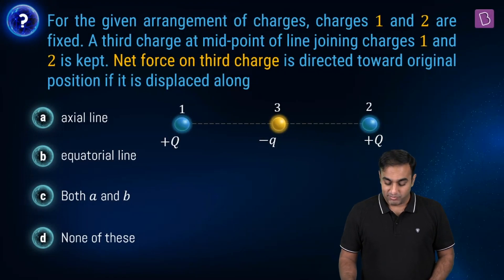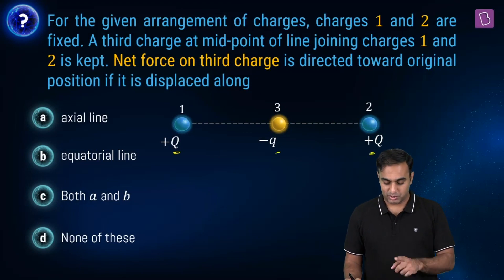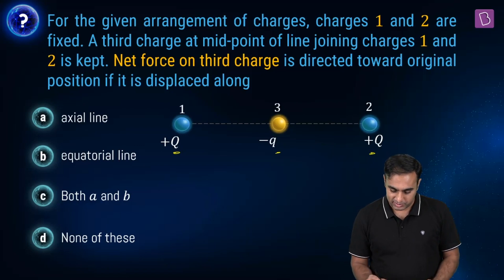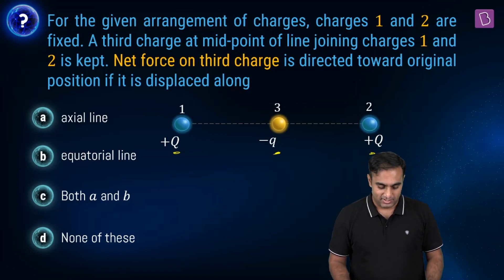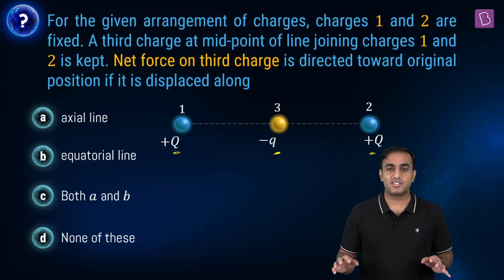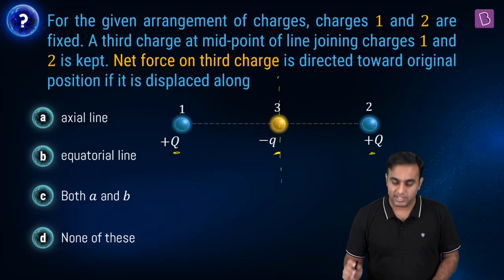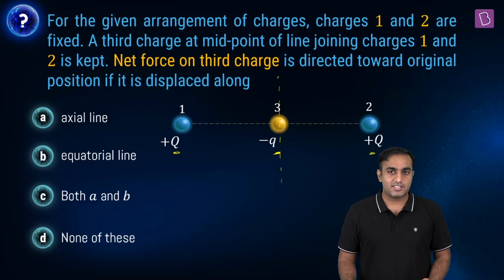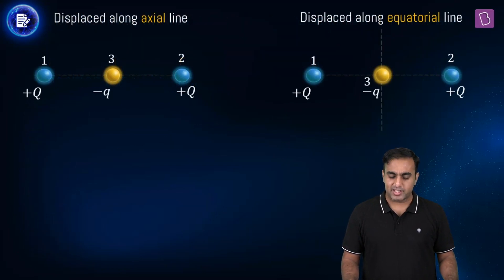Here is another interesting question. We have three charges: plus Q labeled 1, plus Q labeled 2, and minus small q labeled 3. Charge 3 is at the midpoint of the line joining charges 1 and 2. Two cases are given: in case one, minus q is moved slightly along the axial line — the line joining the other two charges; in case two, minus q is moved along a perpendicular bisector, the equatorial line. We must determine in which case the net force on minus q is directed toward the original position.